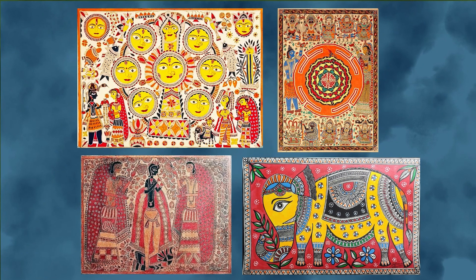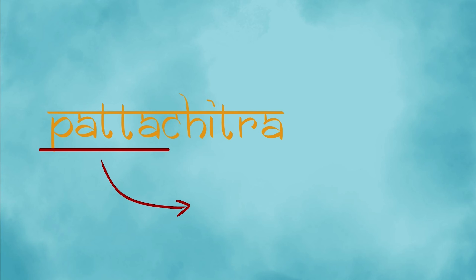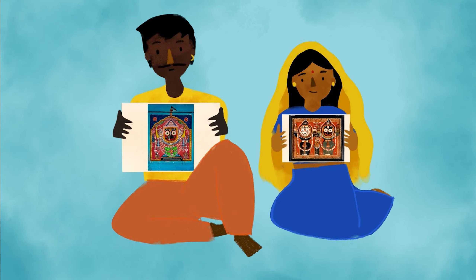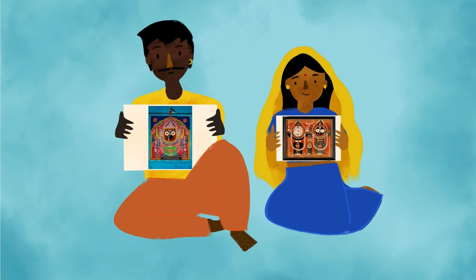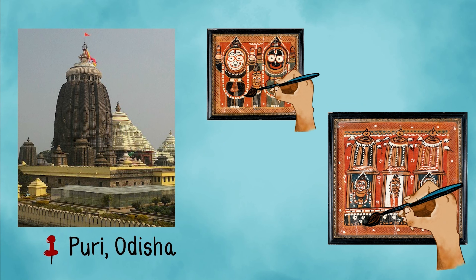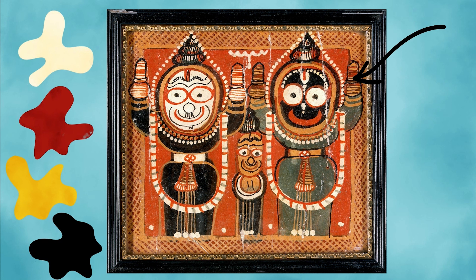Commonly depicted subjects in Madhubani paintings are animals, the sun, the moon, mythological characters, festivals, and many more. Patta Chitra paintings — the word 'patta' is a Sanskrit word meaning canvas and 'chitra' means painting. The earliest Patta Chitra paintings were made by artists known as Chitrakars from Odisha. These paintings depict mythological and religious motifs, especially those of Lord Jagannath and his siblings Balabhadra and Subhadra. Bold, strong outlines and vibrant colors like white, red, yellow, and black with decorative borders are some of the characteristics of the Patta Chitra painting style.